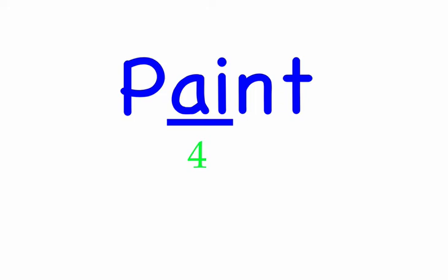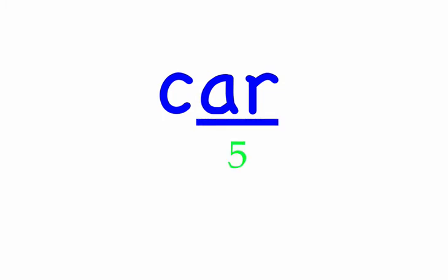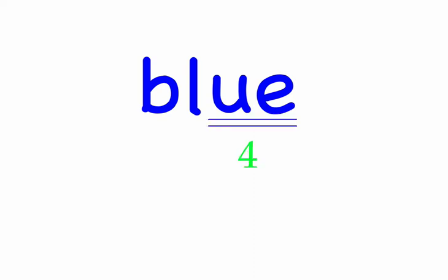The car. Car — two sounds: K, R. Car. Blue — three sounds: B, L, U. Blue. And seal. Seal — three sounds: S, E, L. Seal.